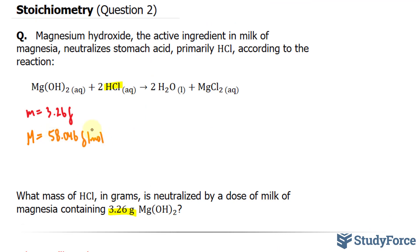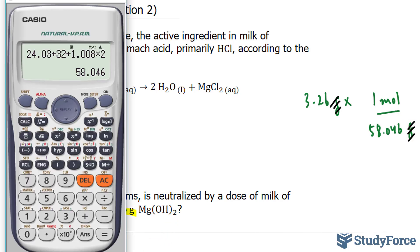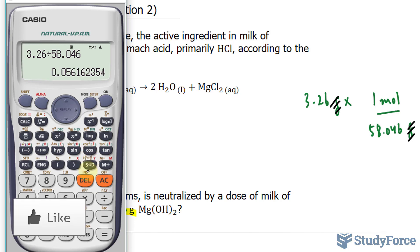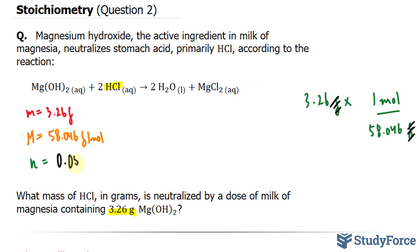I need to multiply these numbers somehow to get the number of moles, which I'll use the letter n for. I'll take 3.26 grams and multiply it by the flipped version of this number in orange. So instead of the moles being at the bottom, one mole will be at the top: 1 mole over 58.046 grams. Notice that by orienting this number this way, the grams units cancel out. 3.26 times 1 divided by 58.046 gives me 0.05616 moles.